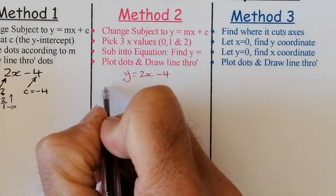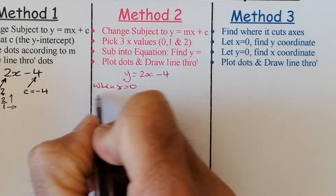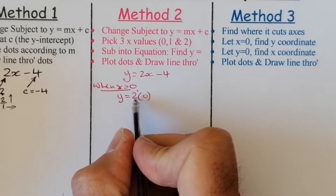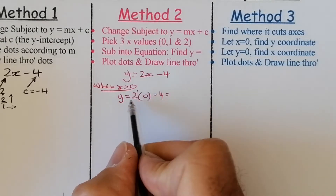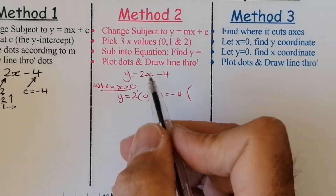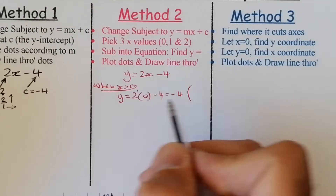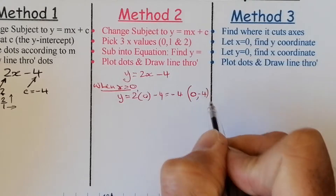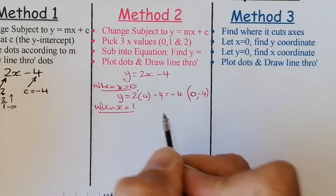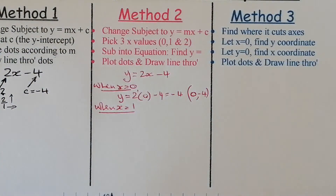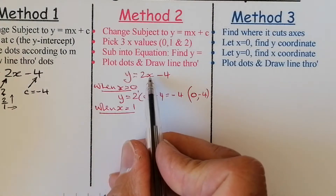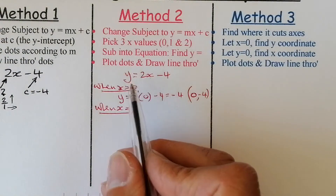I'll use x equals 0, 1, and 2. When x equals 0: y equals 2 times 0 minus 4, giving y equals minus 4. So that's the point (0, minus 4). You just pick any x-coordinates — substituting them into the equation gives you the y-coordinate at that point, allowing you to plot it.